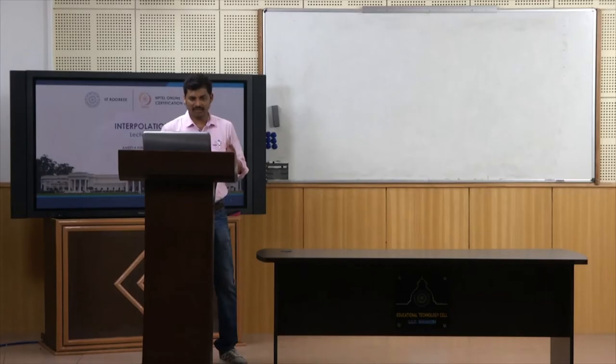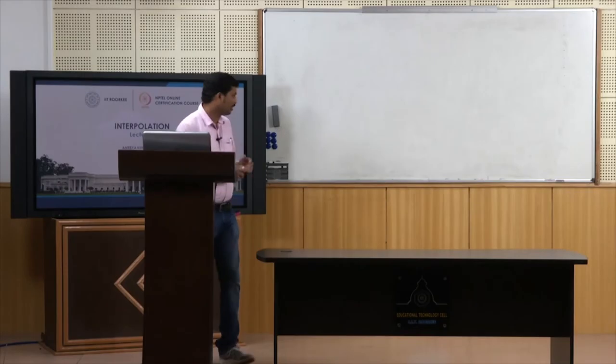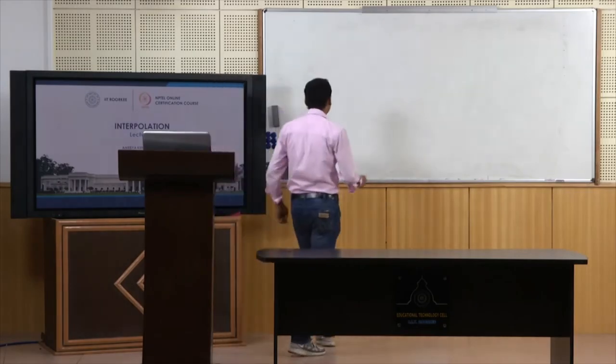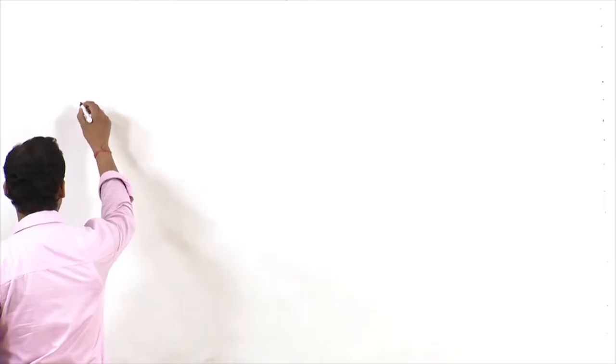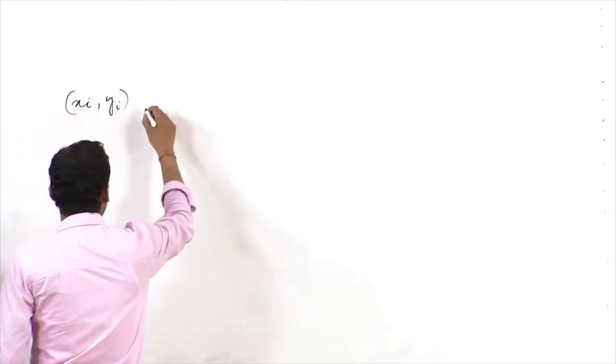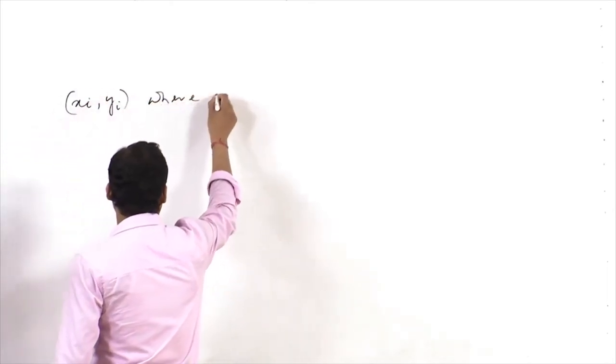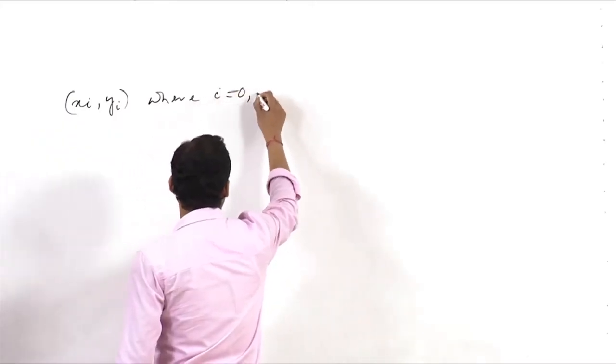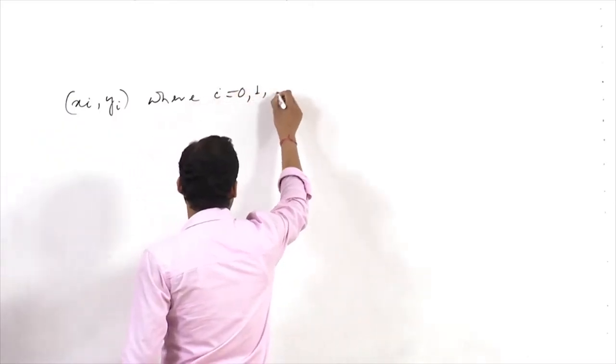Earlier, whatever formulas we have discussed or derived, basically all those are for finite difference operators which are used for equispaced points. Sometimes if you see points placed here like tabular points Xi, Yi where i is varying from 0 to N.